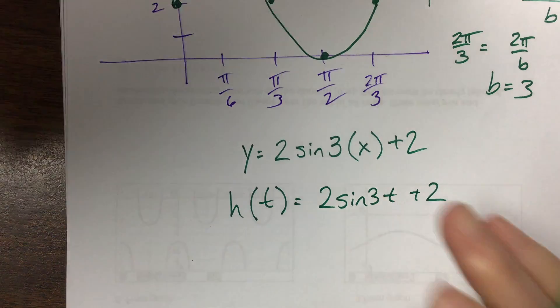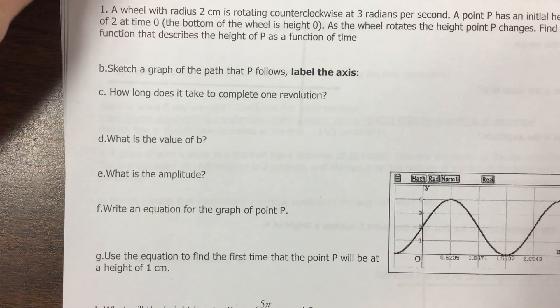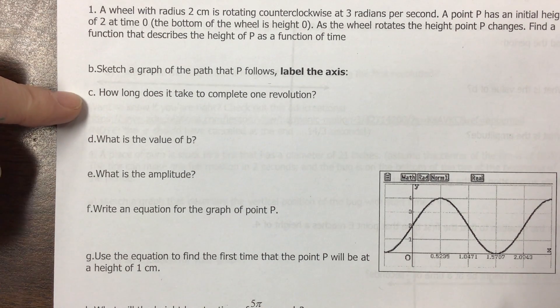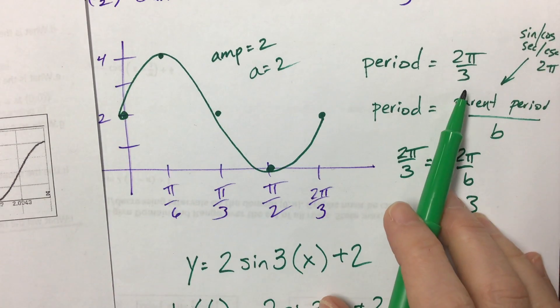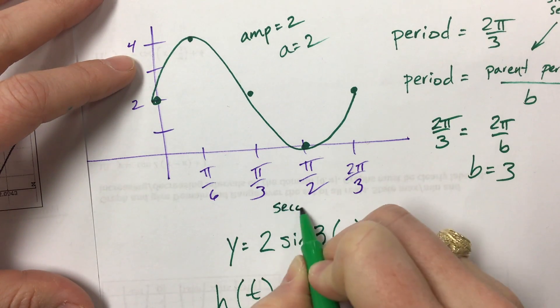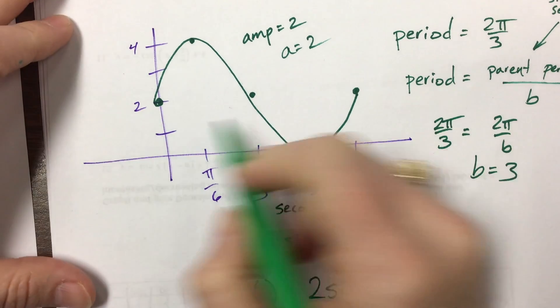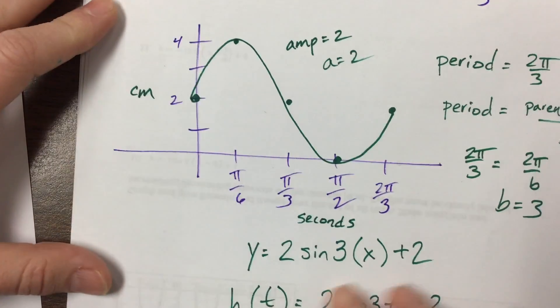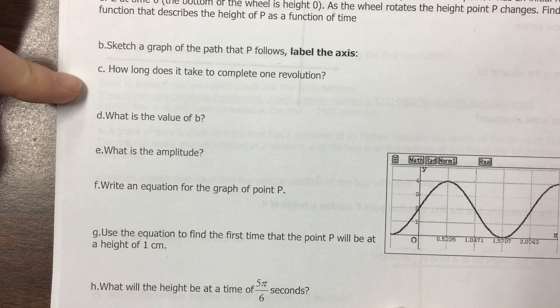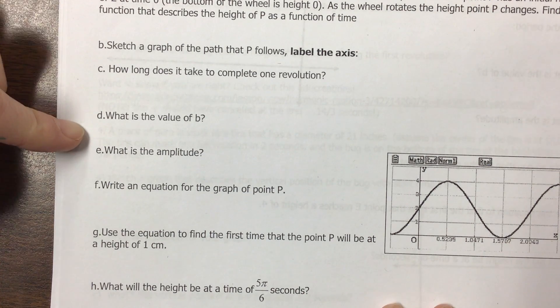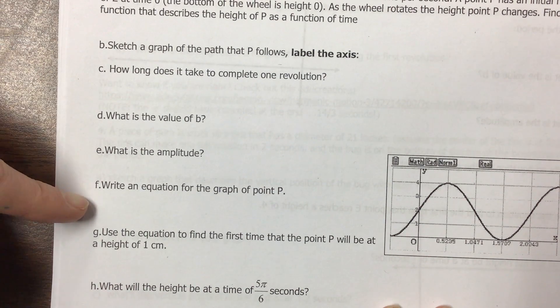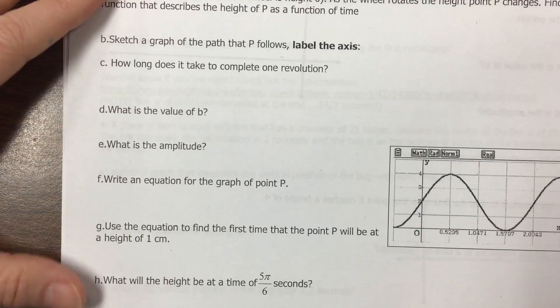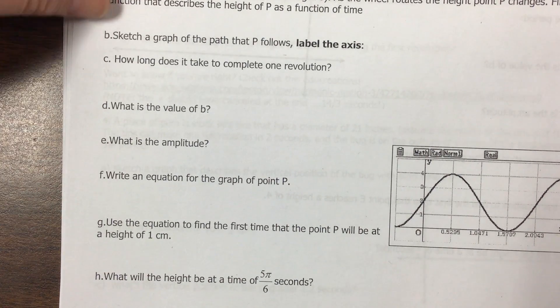Let's check the questions. Sketch a graph — done. How long does it take to complete one revolution? One revolution takes 2π/3 seconds. What is the value of b? We said it was 3. What is the amplitude? 2. Write an equation — h(t) = 2sin(3t) + 2. And part g says: use the equation to find the first time that the point will be at a height of 1 centimeter.